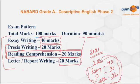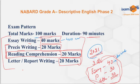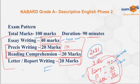One more change: in 2020, essay writing was 40 marks and 400 words. But in 2021, essay was 40 marks but 300 words. In précis also, it was around 170 words in 2020, but in 2021 it was 120 words. So for 2022, you should be ready for both types of papers.